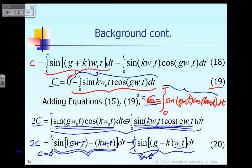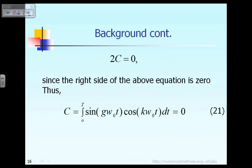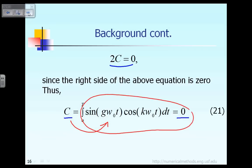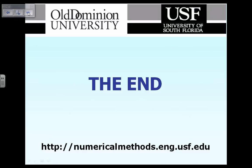We have proved that the integral of sin(g·ω₀t)·cos(k·ω₀t) from 0 to T is equal to zero. As stated on the previous slide, 2C equals zero, therefore C equals zero. Since C was defined as this integral, we have proved that this integral equals zero — one of the key relationships stated earlier. That's the end of this lecture.